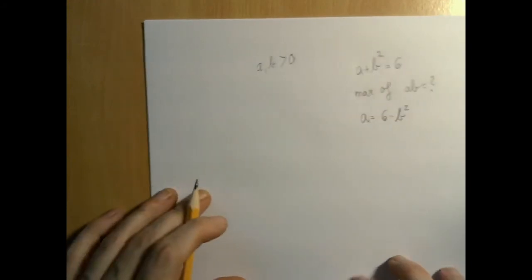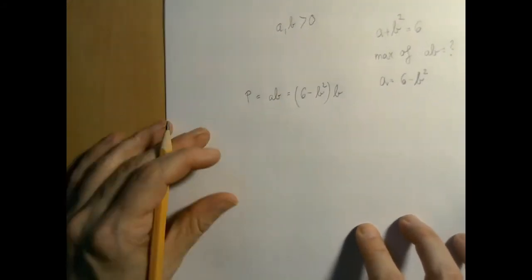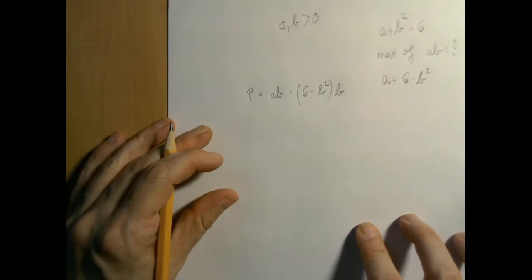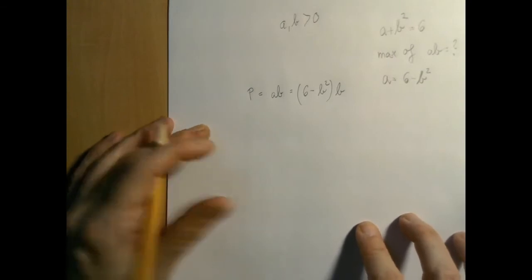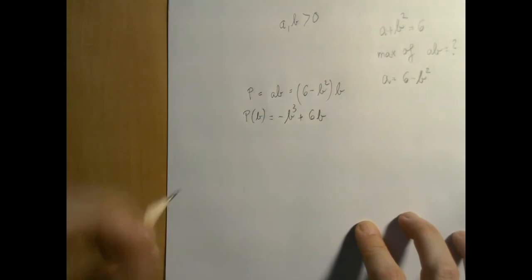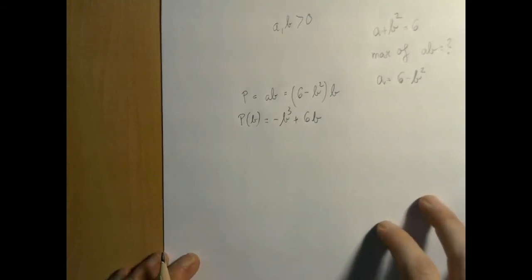And then the product of the two, AB, is now 6 minus B squared times B. So this now is a function in B, which is negative B cubed plus 6B.